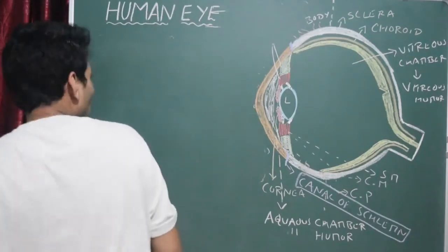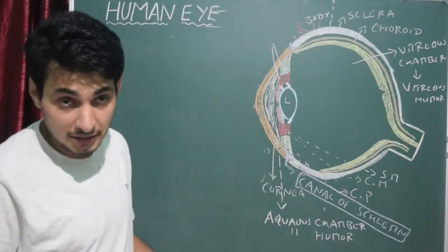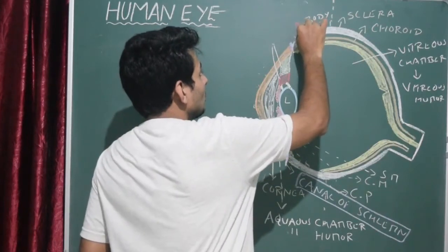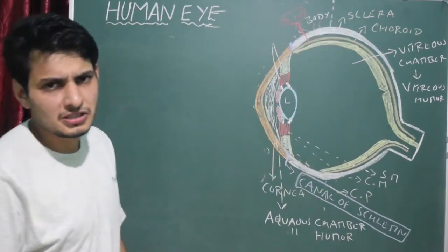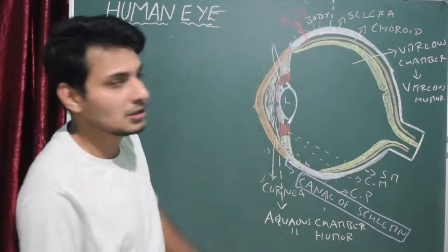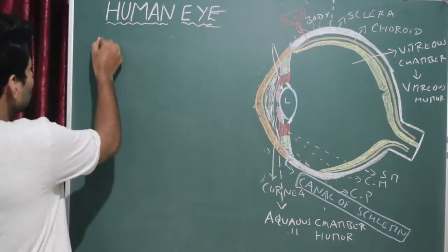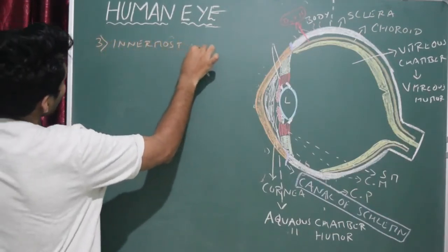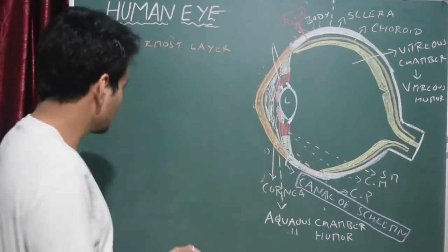One more point for the choroid: it contains melanocytes which give it a dark appearance, and importantly it provides oxygen and nutrients to the retina. You may get a question asking which structure in the eye provides oxygen and nutrients to the retina — the answer is the choroid, the first part of the middle layer. Now we go to the third layer: the innermost layer, which mainly consists of three important cells.